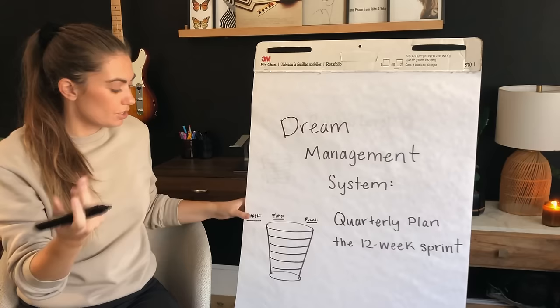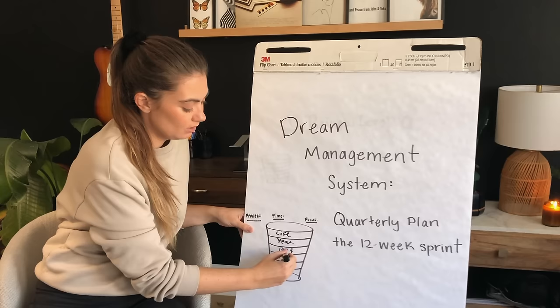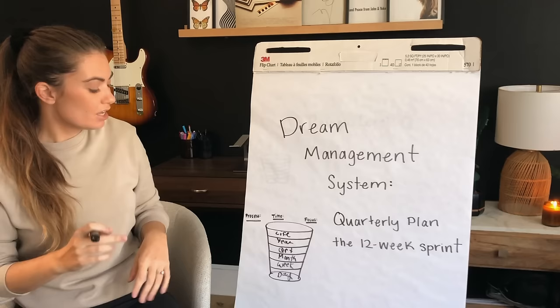At the very top, we have our life planning. Then a level below that, we have yearly planning and yearly goal setting. Then we have the level we're talking about today — quarterly planning. Then we have monthly planning, weekly planning, and daily planning. There's a specific process and a specific focus for each of these.